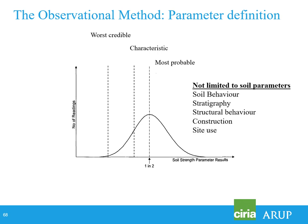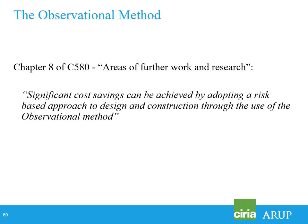As a geotechnical engineer it's tempting to think everything is related to the ground, but there is uncertainty in other areas: structural behaviour, construction tolerances, and site use as well. Interestingly, Chapter 8 of C580 — Areas of Further Work and Research from 2003 — states that significant cost savings can be achieved by adopting a risk-based approach through use of the observational method. Since 2003 I haven't seen an enormous adoption of the observational method, so in that sense C580 kind of failed because it has not led to widespread use of it.